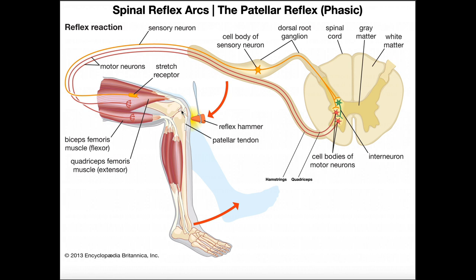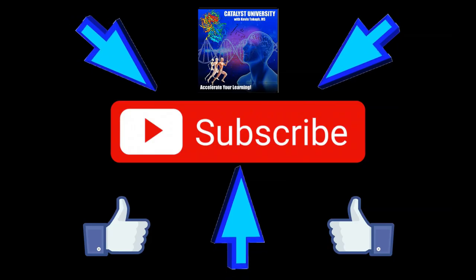One of the ways we can produce a stretch reflex is by stretching the tendon attached to a muscle — if you stretch the tendon, it will in turn stretch the muscle, which will then stretch the muscle spindle. Hopefully this video gave you a good understanding of a stretch reflex arc. Please make sure to like this video and subscribe to my channel. In the following video, we're going to look at the withdrawal reflex. Thank you.